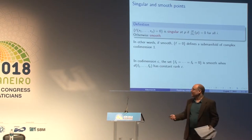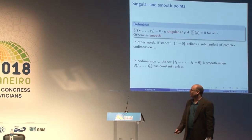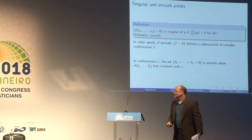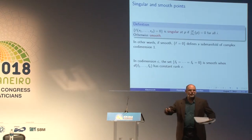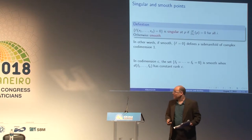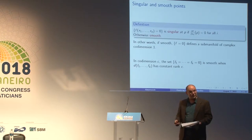In co-dimension C, it's a little bit more complicated, but we all have learned differential geometry and we know that the set of common loci of K equations is smooth when the Jacobian has constant rank equal to the co-dimension. And another thing that we know is that the smooth locus on a variety is open, which is true for varieties in algebraic geometry.